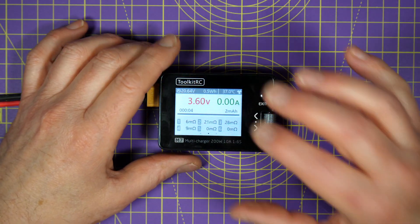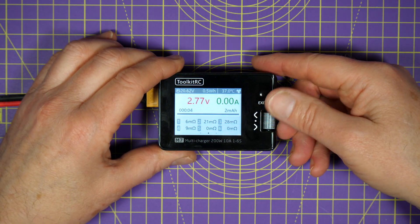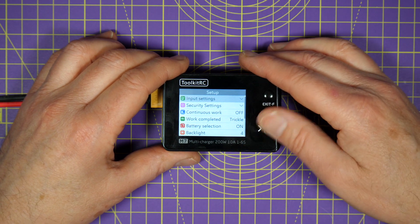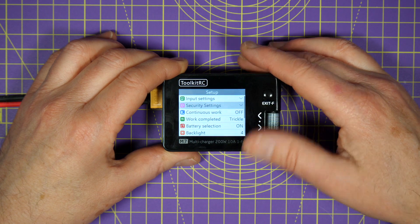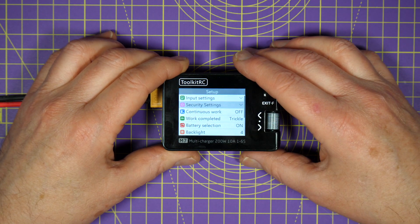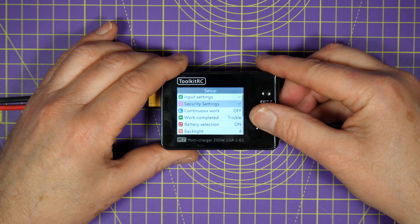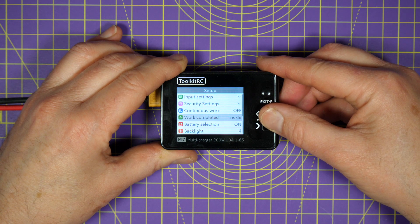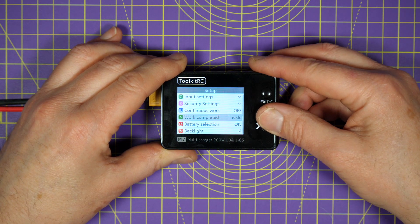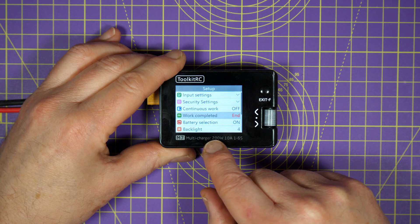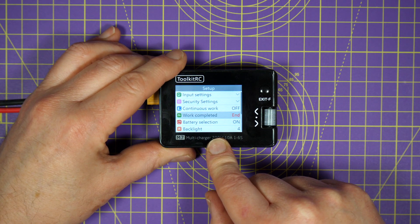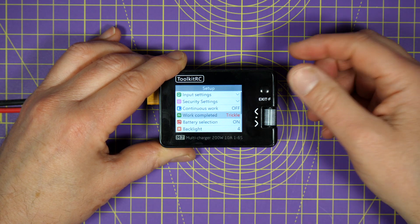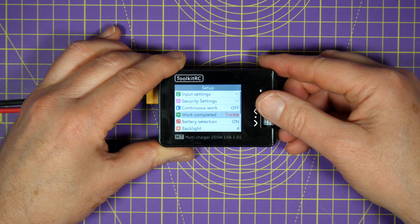Let's take a look at the settings screen. You get to that by long pressing the scroll button. There's a whole bunch of things in here that you can change. There's a whole lot of input settings, security settings—that's just when the fan comes on and when you get alarms when the battery's low, that sort of thing. Most of this is fairly normal. The interesting thing is work completed. So you can choose whether this stops charging at the end of its charge cycle when you're charging a battery, or you can leave it in trickle charge mode. That's the mode I tend to use on all my Toolkit RC chargers.